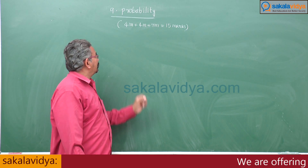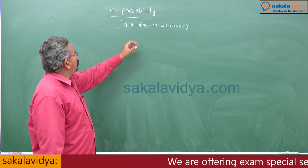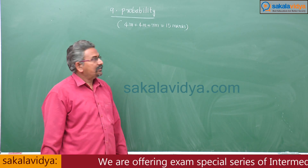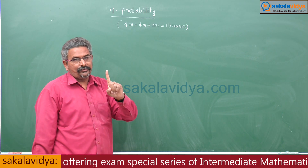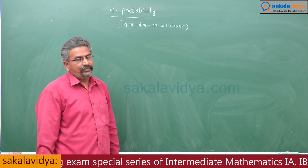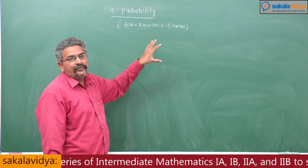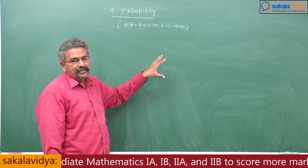In the probability chapter, two short answer type questions will appear and one long answer type question may appear. The total weightage is 15 marks. It is very easy.